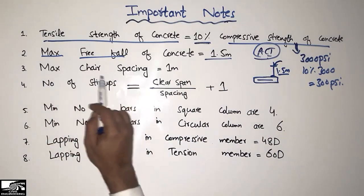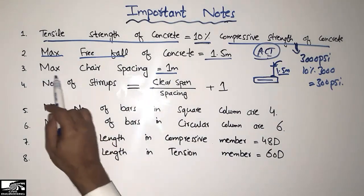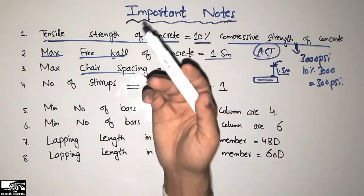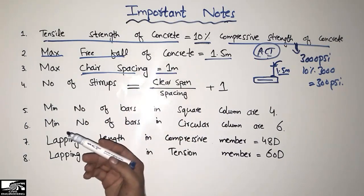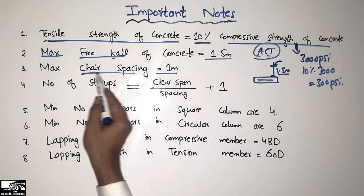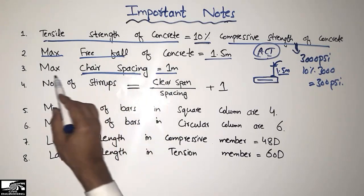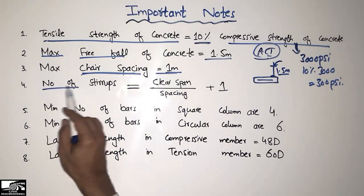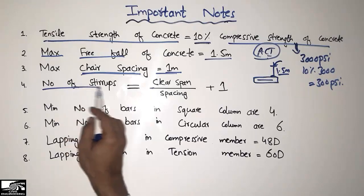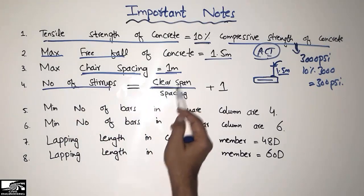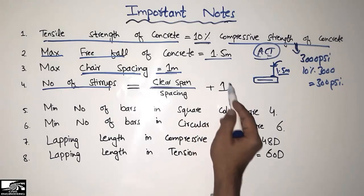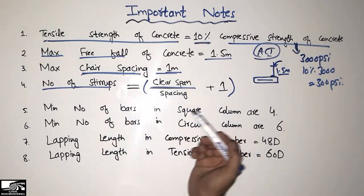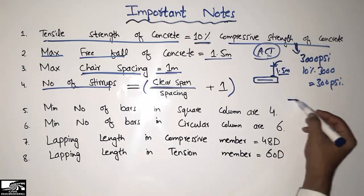The third point is that the maximum chair spacing should be taken as 1 meter. Chair bars are supporting bars provided in buildings or structures to support the upper main or distribution reinforcement. Their maximum distance should be 1 meter. To find the number of stirrups, you can use the formula: number of stirrups = (clear span / spacing) + 1.